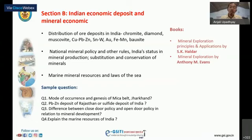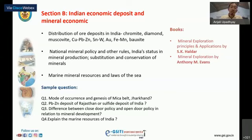For Indian economic deposits and mineral economics, once thoroughly acquainted with Paper A you can correlate with this paper. Since this paper focuses on India, expect questions on distribution of ore deposits — chromium, diamond, muscovite, copper, lead, zinc, tin, tungsten, coal, iron, manganese, bauxite. For mineral economics, expect questions on the national mineral policy, rules, India's status in mineral production, substitution, and conservation of minerals.